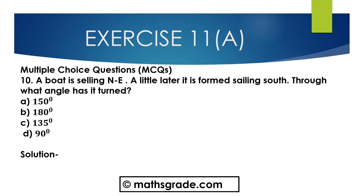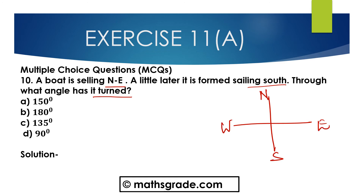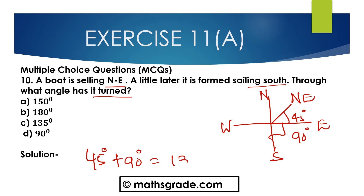Question number 10, Multiple choice questions. A boat is sailing North East. A little later it is found sailing South. Through what angle has it turned? Options are 150 degrees, 180 degrees, 135 degrees, and 90 degrees. From North East, North to East is 45 degrees, then East to South is 90 degrees. So 45 plus 90 is 135 degrees. Option C is the correct option.